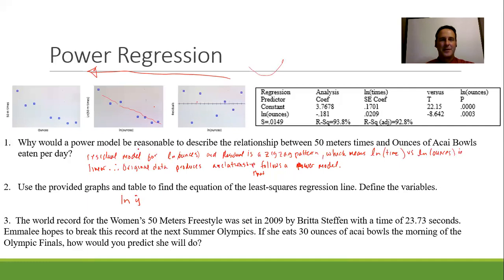Use the graphs provided to find the equation of the least squared regression line and define your variables. No sweat, we've already done that, but we'll do it again. The natural log of y-hat, and again, we know it's natural logs because all of these are natural logs. I know it's power because if your x's ever have logs in it, you know it's a power. If it didn't have logs here, that would match the exponential. So 3.7678 plus negative 0.181 times the natural log of x, and x is equal to ounces and y-hat is equal to time in seconds. You can leave it just like that.